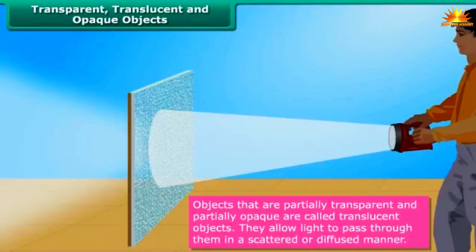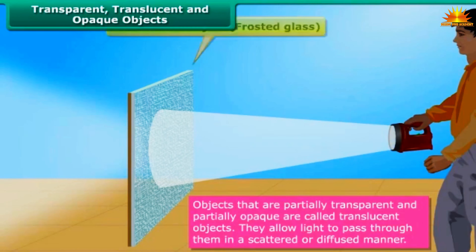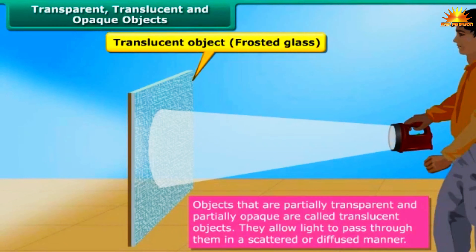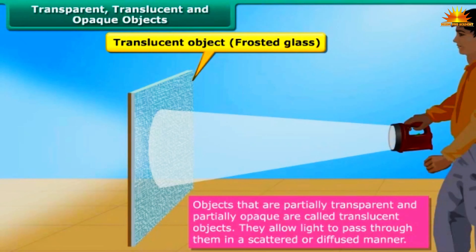Objects that are partially transparent and partially opaque are called translucent objects. They allow light to pass through them in a scattered or diffused manner. Frosted glass, tracing paper, greased paper, etc. are examples of translucent objects.